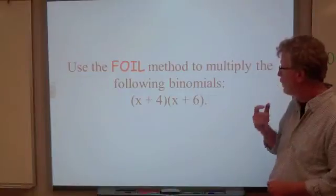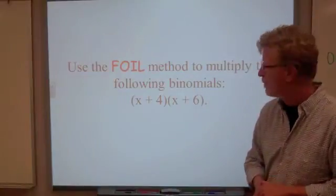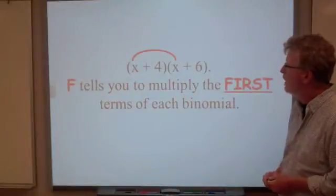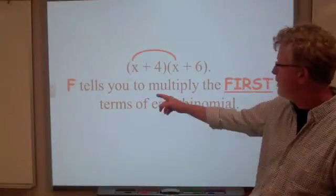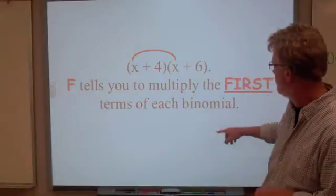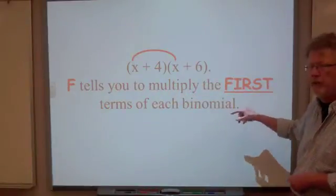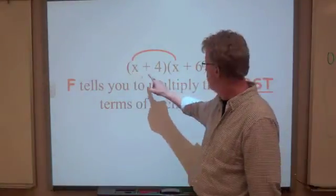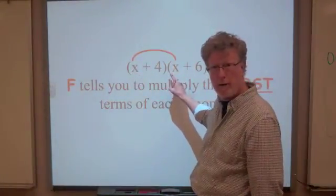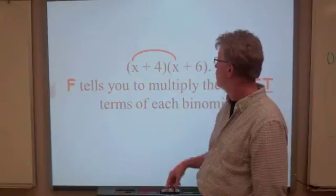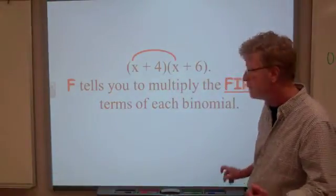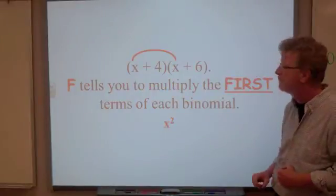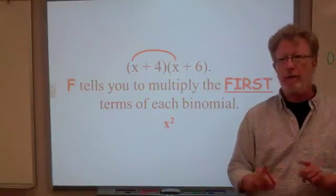So we're going to use the FOIL method, and we're going to multiply x plus 4 times x plus 6. And F, remember, in FOIL, tells us to multiply the first term of each binomial. So we're going to take the first term from this binomial and multiply it times the first term in this binomial. And, of course, you know what that's going to give us because we're going to add those exponents and we get x squared. So the F for the first.